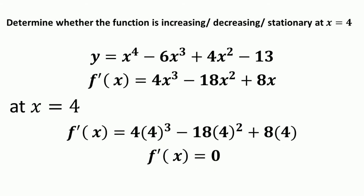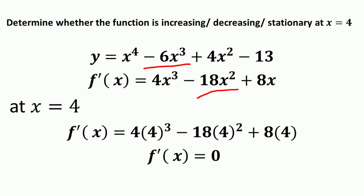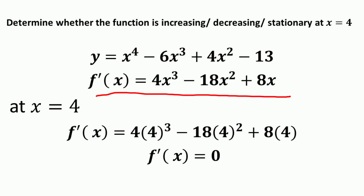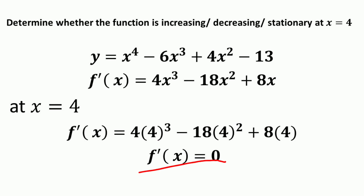Consider the last example: determine whether the given function is increasing, decreasing, or stationary at x equal to 4. The function y equals x to the power 4 minus 6x cubed plus 4x squared minus 13. The first derivative f prime of x equals 4x cubed minus 18x squared plus 8x. Substituting x equal to 4: f prime of 4 equals 4 times 64 minus 18 times 16 plus 8 times 4, which equals zero. So we can say that the function is stationary at x equal to 4.